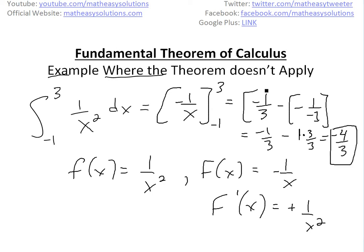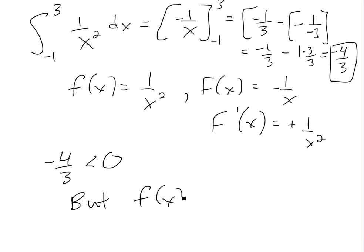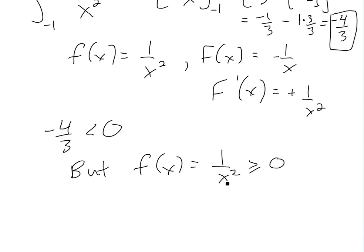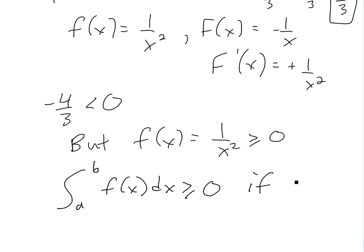So negative four over three is the answer using the fundamental theorem with basic integration techniques. But the problem is that negative four over three is less than zero. You can see this is wrong, because if f of x equals one over x squared, this is always greater than or equal to zero — whatever you put in, even a negative, it's going to be positive. So from the property of integrals, the integral from a to b of f of x dx is greater than zero if f of x is greater than or equal to zero.